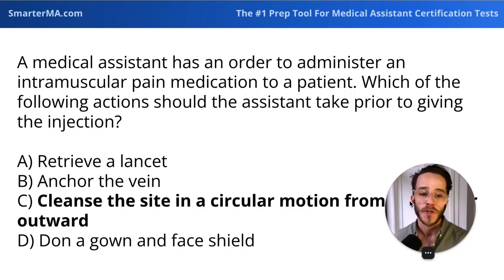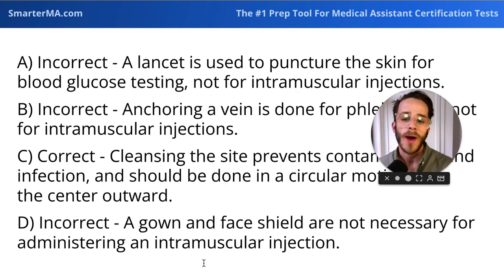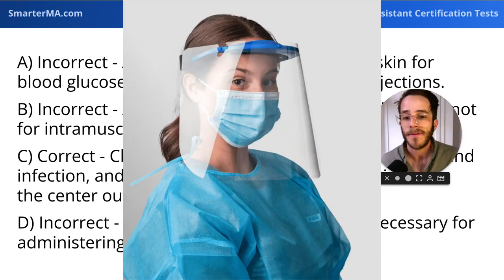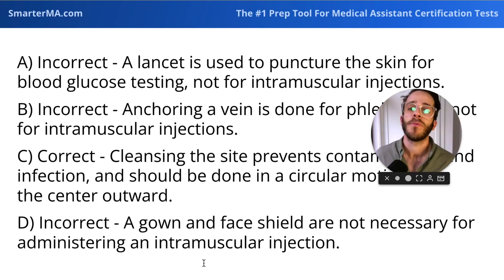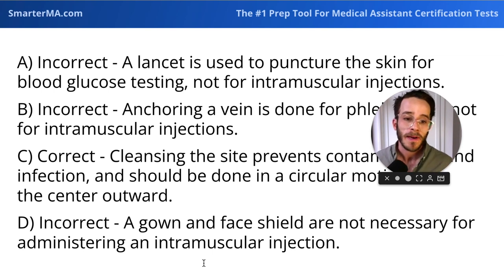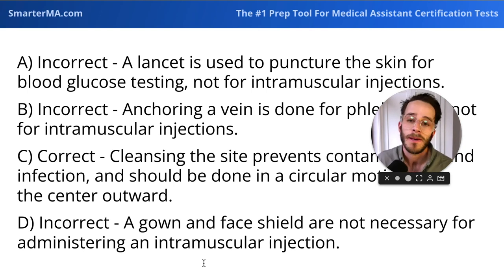D — don a gown and face shield — is incorrect. A gown and face shield aren't necessary for administering an intramuscular injection. How much PPE — personal protective equipment — do we need? We use what we reasonably think is required to keep us and the patient safe. A procedure like abscess removal with potential blood splatter would require a gown and face shield, but for an IM injection, just a basic mask and sometimes gloves are required by law, though medical assistants can request additional PPE.